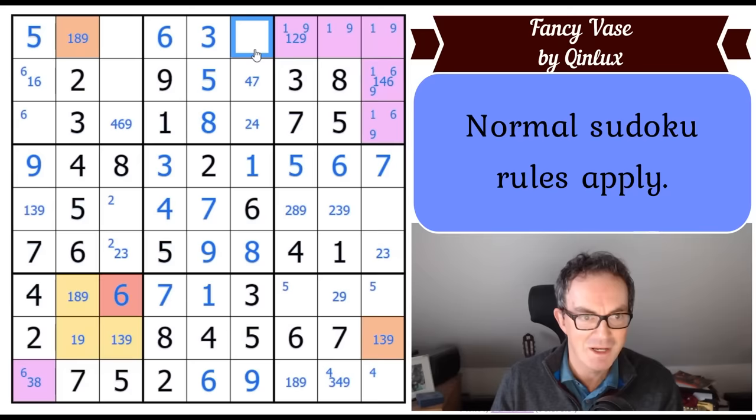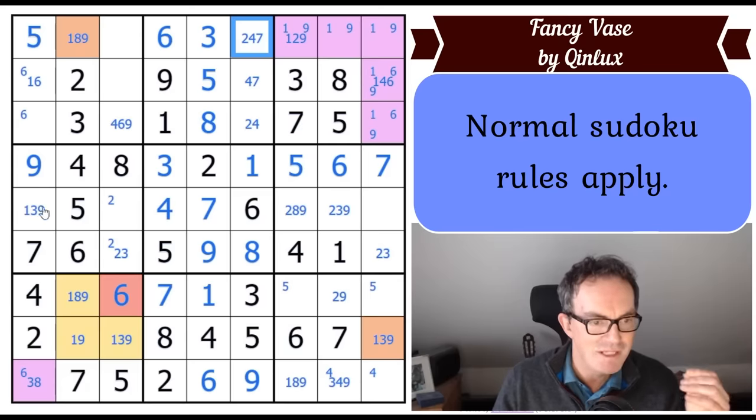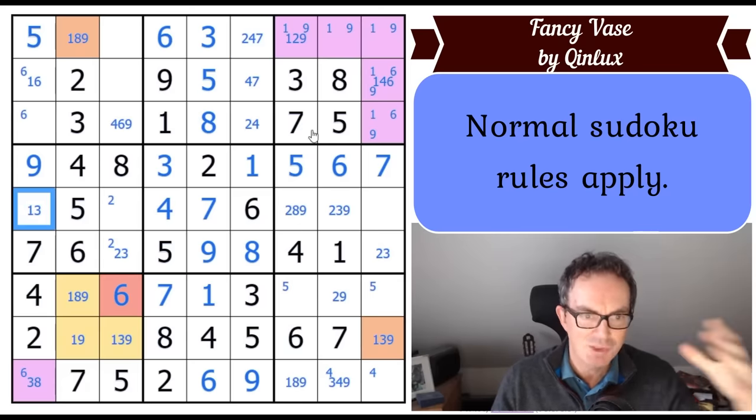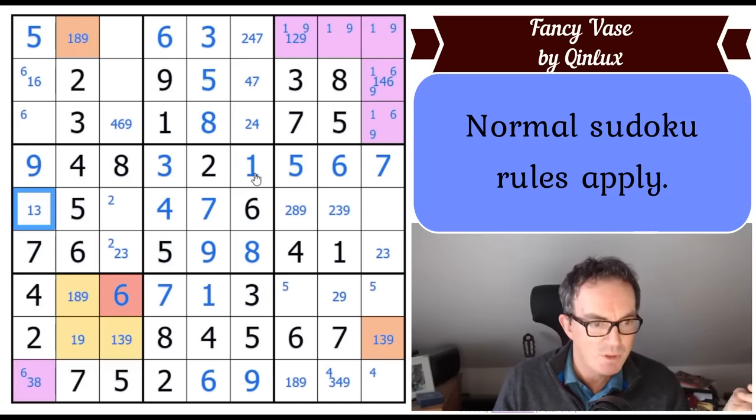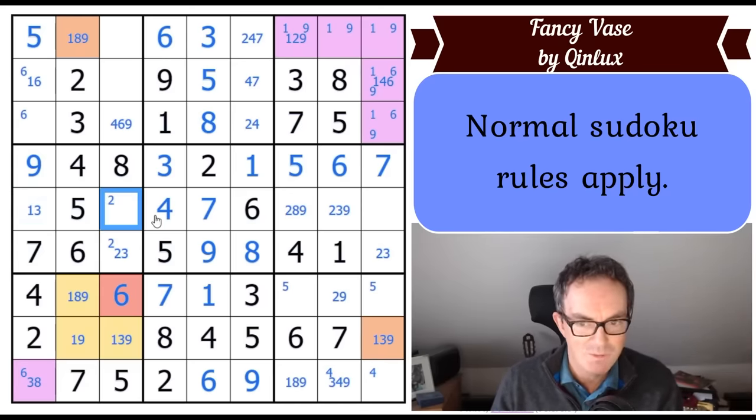Right. Now we can look at column five where we've got one, seven, eight, and nine to place. And that square has to be an eight. It's the only option because it sees one, nine, and seven. So this is an eight. That fixes the nine and the eight in that box. It fixes the one, the nine and the seven and the one and the nine. And the five. That makes this a seven.